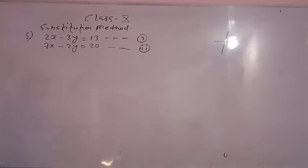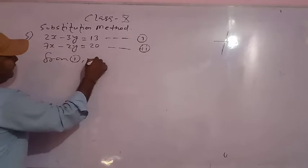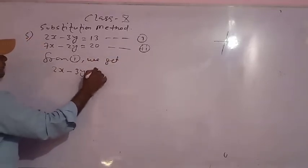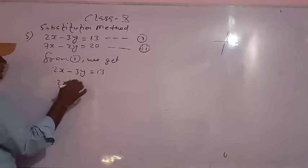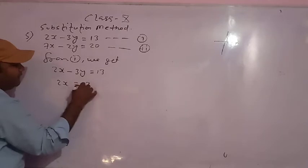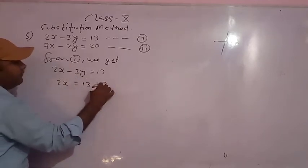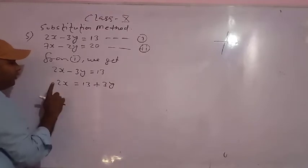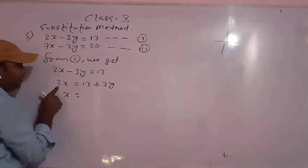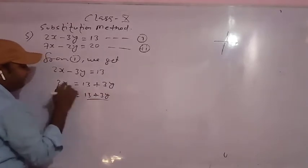From the first equation we will get the value of x. From the first equation we get x: minus 3y comes to the right side and becomes positive 3y. Now the 2 has to go to the right side, so x equals 13 plus 3y by 2.